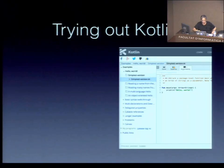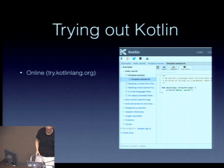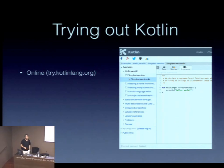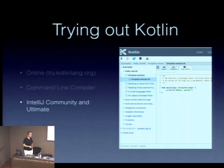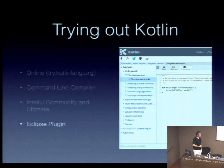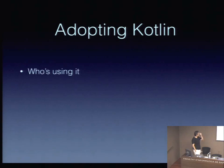To try out Kotlin: go to try.kotlinlang.org — you can log in, save sessions, and output to JVM or JavaScript without installing anything. You can also download the command-line compiler from kotlinlang.org. IntelliJ Community Edition and IntelliJ Ultimate are available; there's also an Android Studio plugin, a RoboVM plugin for iOS, and an Eclipse plugin — though Eclipse won't have all features on par with IntelliJ.